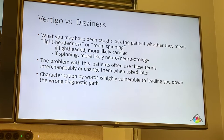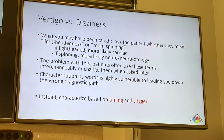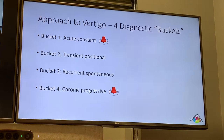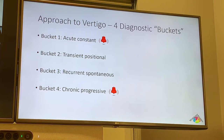The more neurology-approved approach is the timing and trigger method. You pay close attention to when the onset was and what triggers symptoms. Based on this, you fit your patient into one of four diagnostic buckets: acute constant, transient positional, recurrent spontaneous, and chronic progressive. The acute constant and chronic progressive are the red flag categories requiring particular attention, and each bucket has its own differential diagnosis.